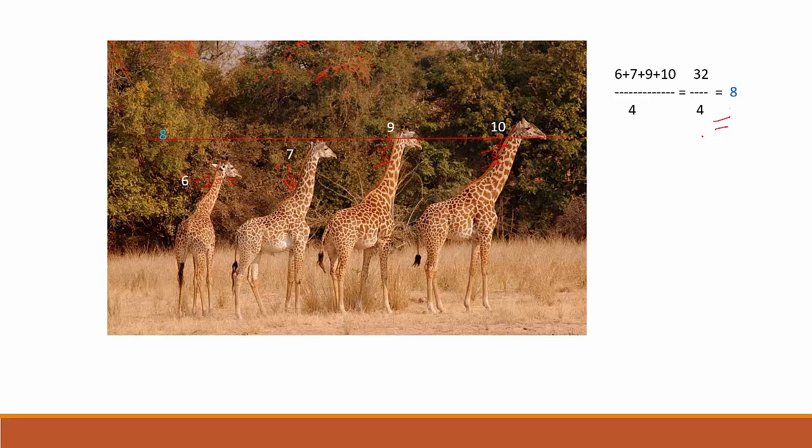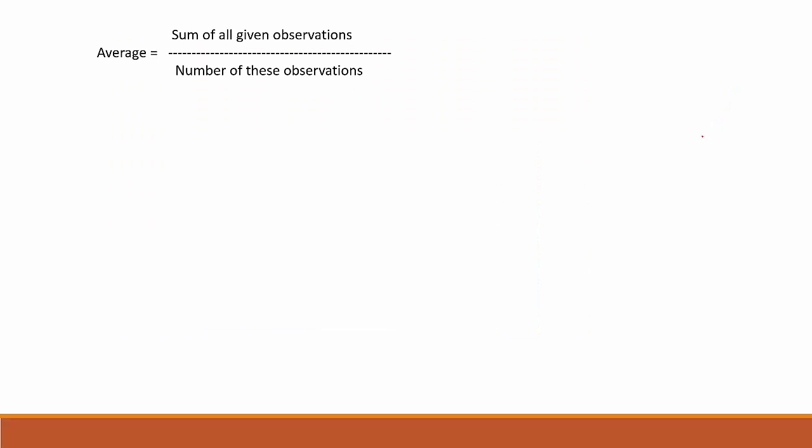Now that we have seen what average is, how do we define it? Average is defined as the sum of all given observations divided by the number of observations. In the first example, it was the number of chocolates divided by the number of friends. In the second example, it was the height of all the giraffes divided by the number of giraffes.